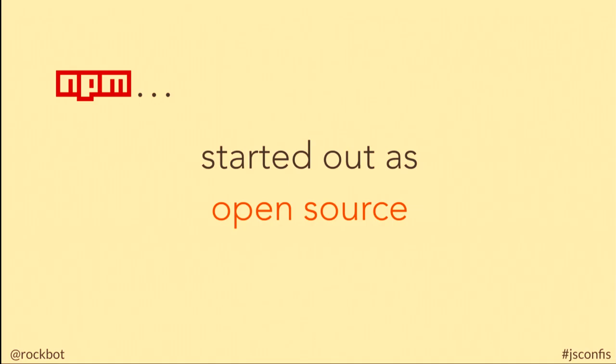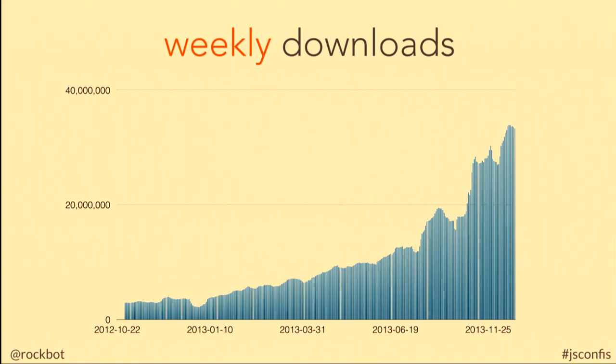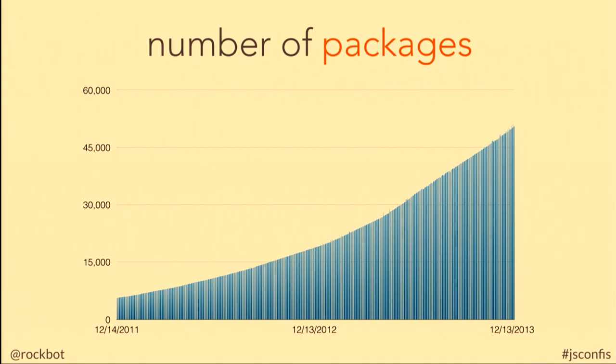NPM started out as an open source project. Node came around in 2009, and people wanted to share code — to use little modules and add them into their websites or applications. So Isaac Schlueter, our CEO, created NPM as just a cool thing. And then something interesting happened: people started using Node a lot, and with it, they started using NPM a lot. This is the graph of people installing Node modules over the first four years of NPM's existence. It's exponential — not what you'd expect.